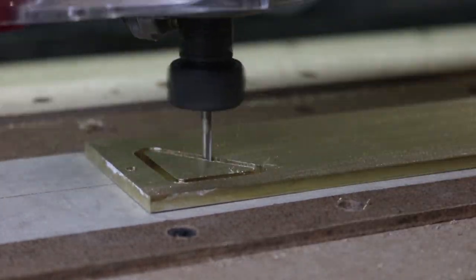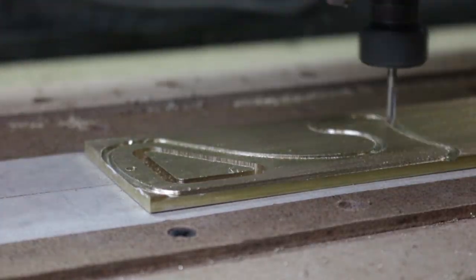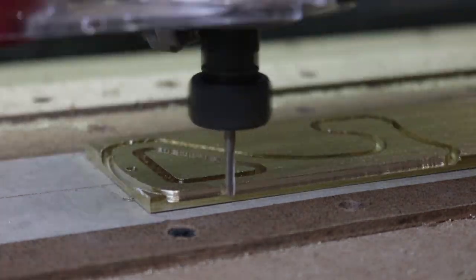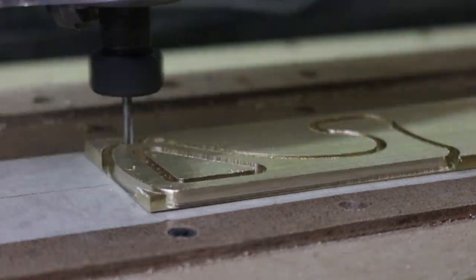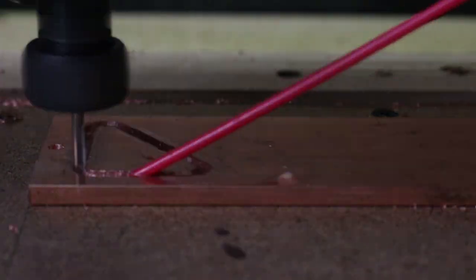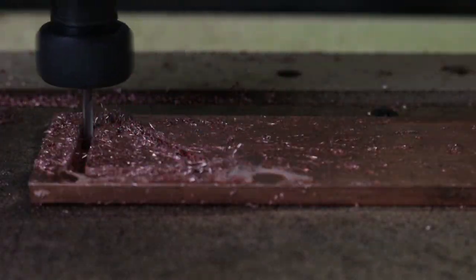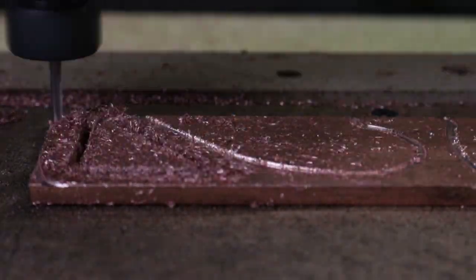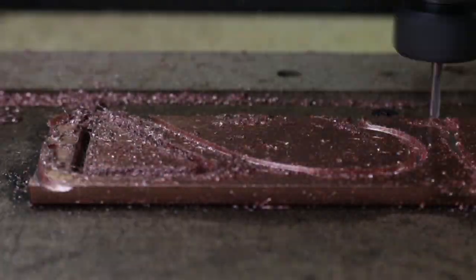So cutting the brass went very smoothly. These parts aren't very complex geometrically, which makes them easy to machine. Again, we had some small difficulties with the copper, but nothing a little lubricant couldn't fix.